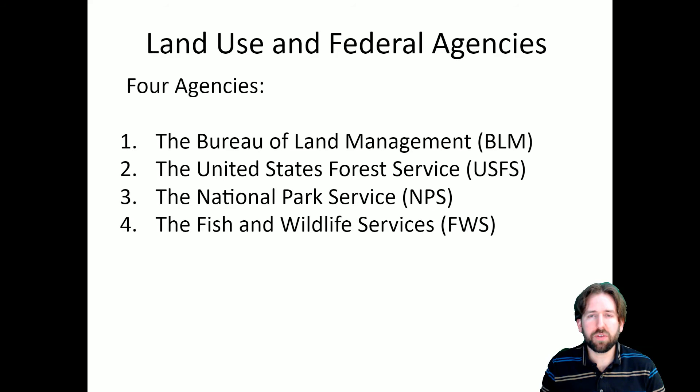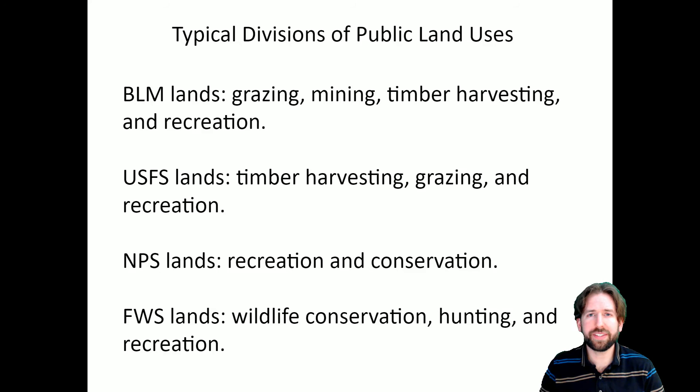In terms of public lands in the United States, there are a few agencies that help manage the different lands: the Bureau of Land Management (BLM), the United States Forest Service (USFS), the National Park Service (NPS), and Fish and Wildlife Services (FWS). BLM lands have grazing, mining, timber harvesting, and recreation associated with them. The USFS lands have timber harvesting, grazing, and recreation. NPS has recreation and conservation, and the FWS lands have wildlife conservation, hunting, and recreation. There is some overlap, but they each kind of have their own niche.